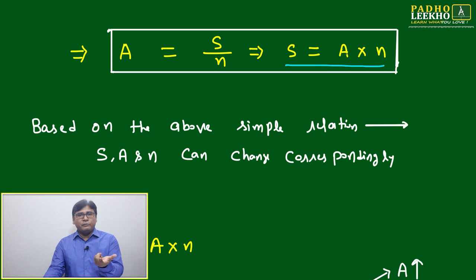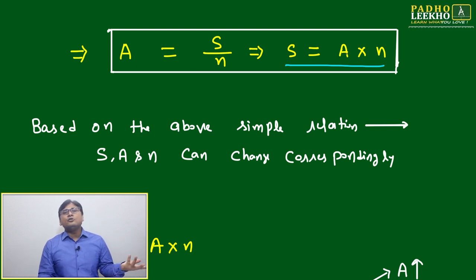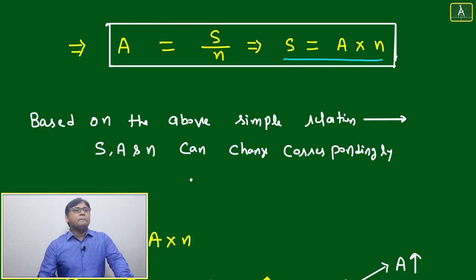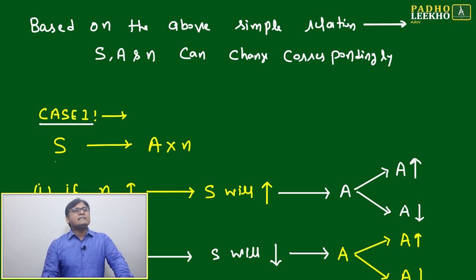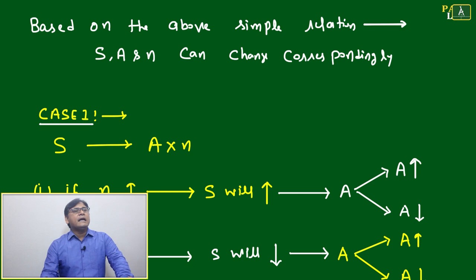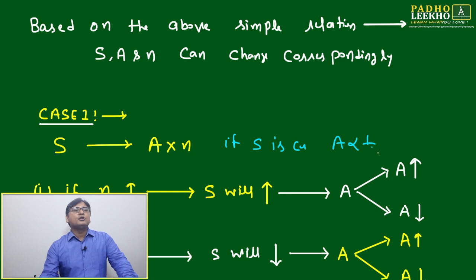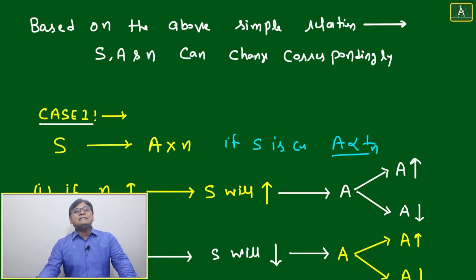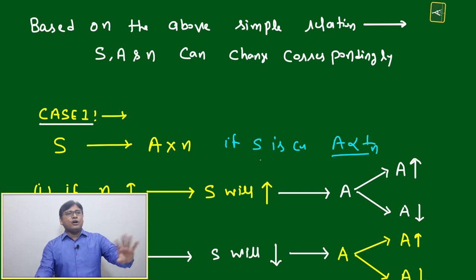If any new numbers are added, just multiply to get the total sum. Based on the relation S = A × n, S, A, and n can change correspondingly. S is directly proportional to average, and S is directly proportional to n. If S is constant, then average is inversely proportional to n — if n increases, average decreases; if n decreases, average increases.